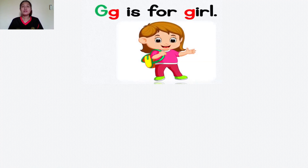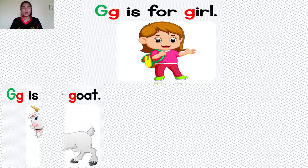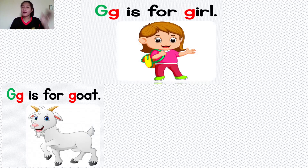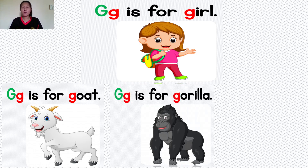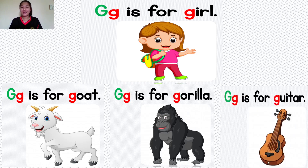Now let's move to the letter G. The letter G is for gold. Gold. Very good. The letter G is for gorilla. Gorilla. And the letter G is for guitar. Guitar. Very good.